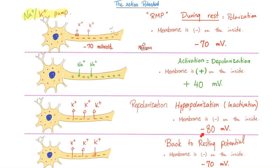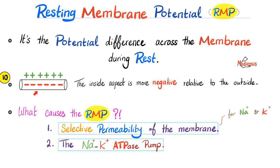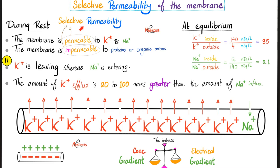Upon activation or depolarization, sodium starts rushing in. Sodium is positive, so the inside becomes positive: +40 millivolts. Next, during repolarization, we go back to rest — sometimes we overshoot. Instead of going from +40 to −70, we go to −80. We reverse this via the inward rectifying potassium channel, which brings some potassium that was pushed outside back inside. The resting membrane potential is −70 millivolts for a medium-sized neuron. To understand the Nernst and Goldman equations, suppose we're talking about a large nerve fiber with a resting membrane potential of −90 millivolts.